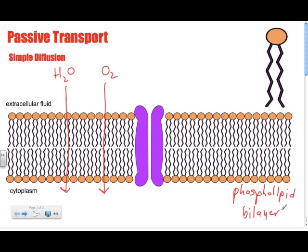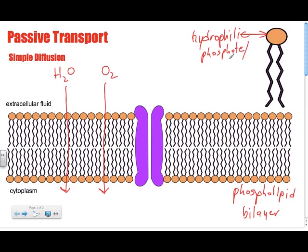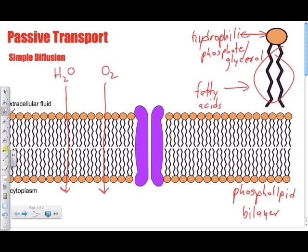It's a bilayer because there are two layers. This here is a larger version of a piece of the phospholipid bilayer. This is our phospholipid — this part is what we call the hydrophilic end, which means water-loving. The hydrophilic end is where you'll find your phosphates and glycerol groups. The bottom end, these legs here, are what we call our fatty acids, which are hydrophobic — they don't mix well with water.